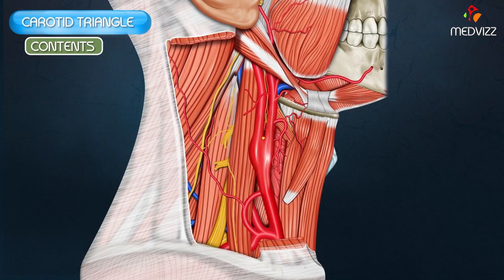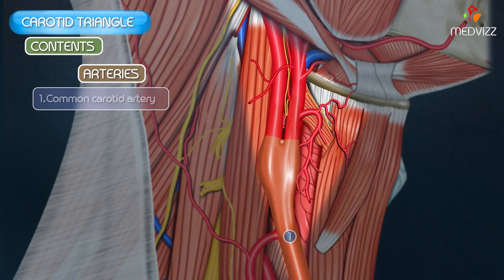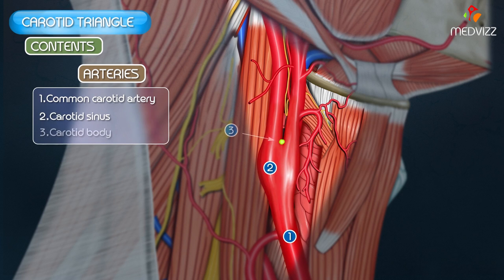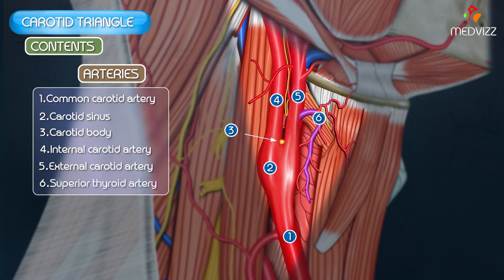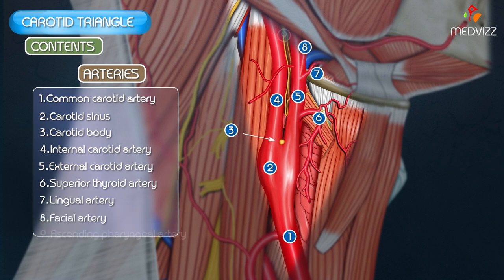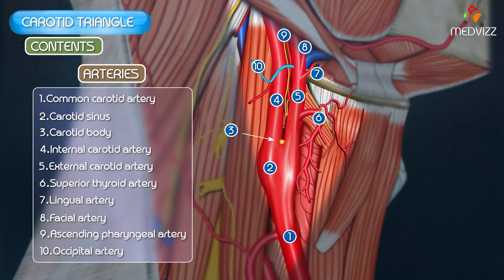The carotid triangle is extremely important for its neurovascular structures. The arteries include the common carotid artery with the carotid sinus and carotid body at its termination. You can also see the bifurcation of the common carotid artery into the internal carotid artery and external carotid artery. Several branches of the external carotid artery are also found here: the superior thyroid artery, lingual artery, facial artery, ascending pharyngeal, and occipital branches.